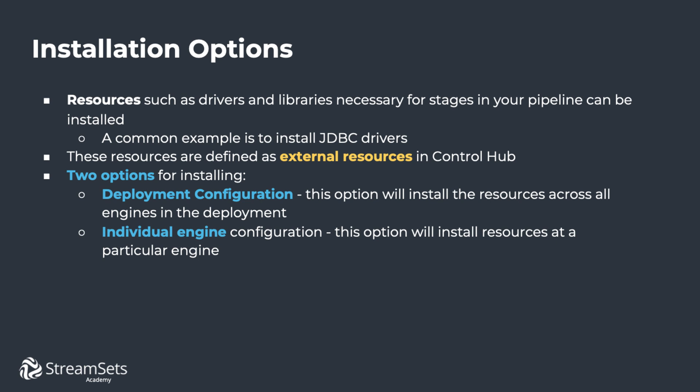In Control Hub, there are two ways to install these types of resources. The first way is by defining the external resources in a deployment configuration, where the resources will be installed across all execution engines in the deployment. The second way is by installing an external resource directly onto an execution engine.